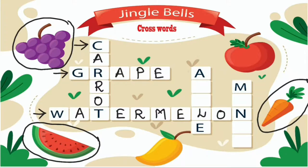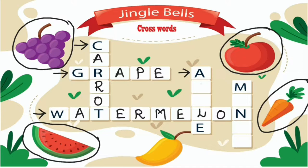The next fruit starts with the letter A. Children, A for Apple — yes, you found that! Where is the apple? It is a red color fruit. What is the spelling of apple? A-P-P-L-E. Apple.